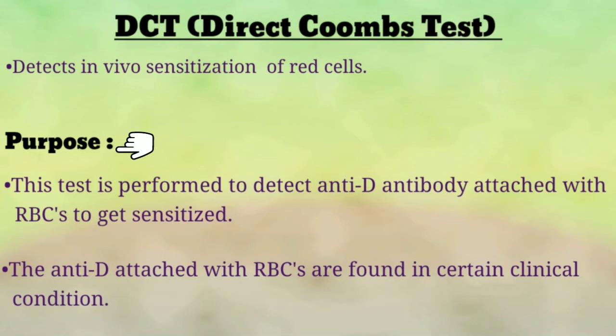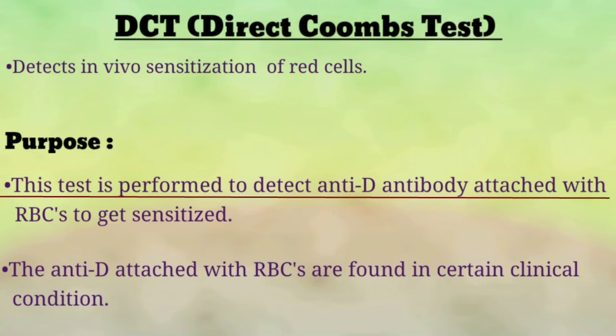The purpose of the direct Coombs test is to detect anti-D antibody attached to RBCs, which sensitizes them. We perform this test to detect the anti-D antibody that is attached to the surface of RBCs and is sensitizing them — that is what we detect in the direct Coombs test.